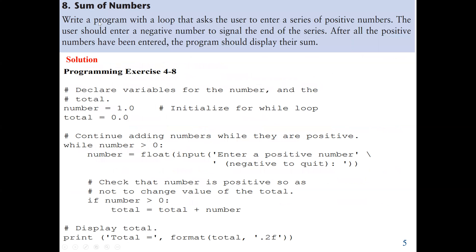Now let's look at the second problem. We are going to write a program with a loop that asks the user to enter a series of positive numbers. The user should enter a negative number to signal the end of the series. Then after all the positive numbers have been entered, the program should display their sum. We have to use a while loop with a sentinel value — the sentinel value will be a negative number.